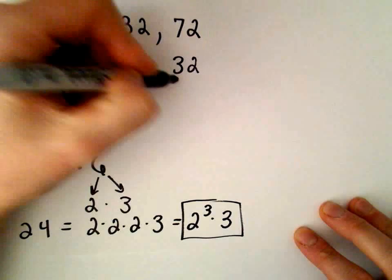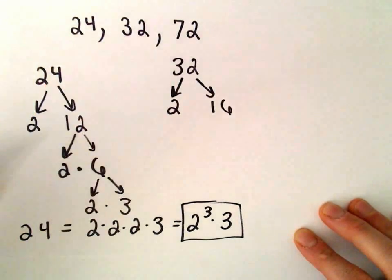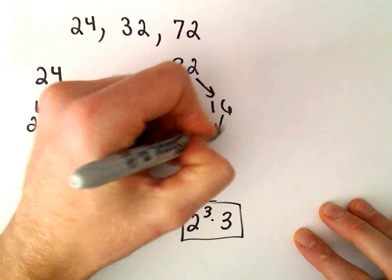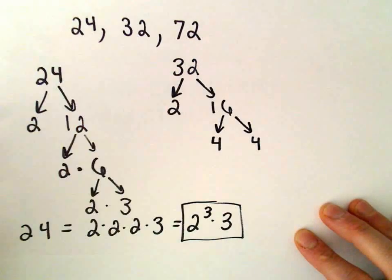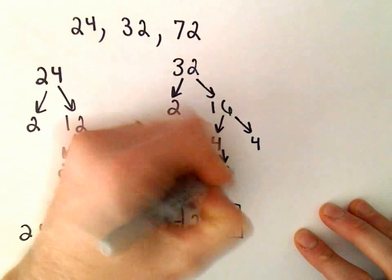I'm going to do the same thing for 32. We could write 32 as 2 times 16. 16 we can write as 4 times 4. And then each 4 we can write as 2 times 2.